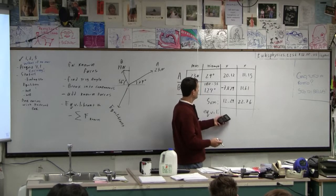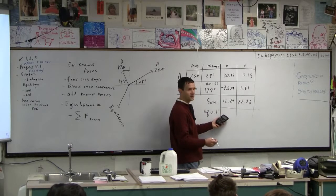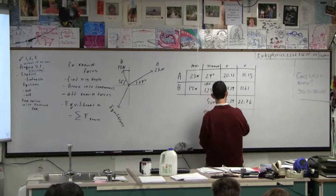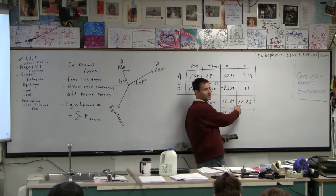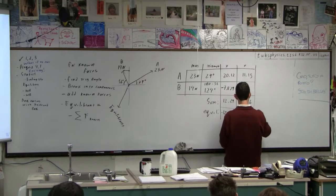Okay, so what is the equilibrium going to be? What do you add to this in the x to make x add up to 0? Is it negative 12.29, right? And what do you add to this to make this 0? Negative 22.76, right? Okay.